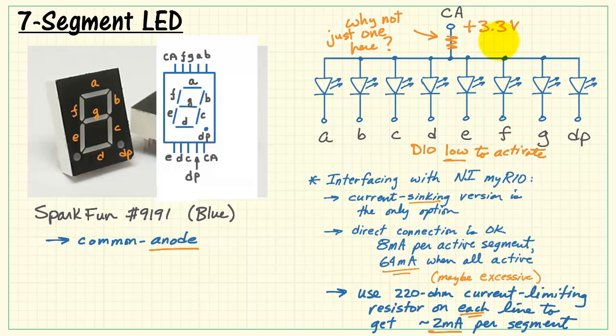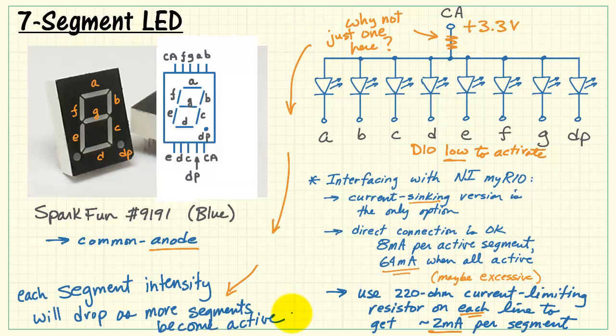You might be wondering, why not just place a current limiting resistor right here? Well, it turns out that each segment intensity would drop as more segments become active. So we can't get by with one. We actually need 8.